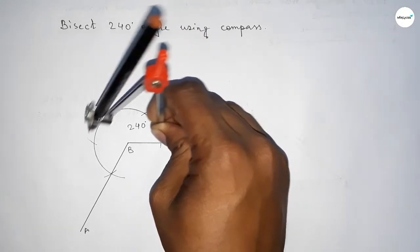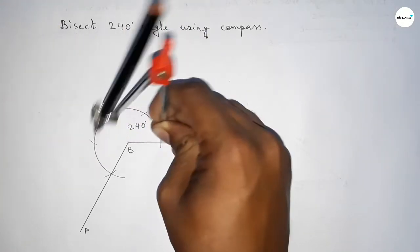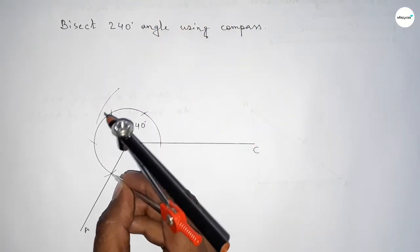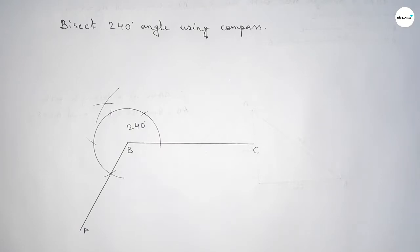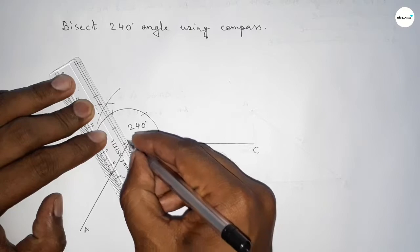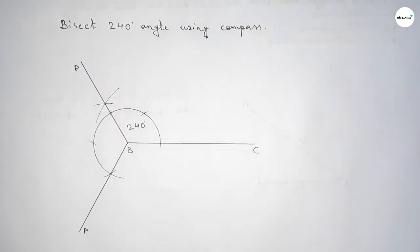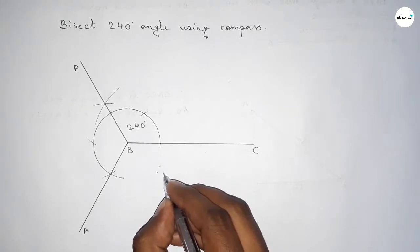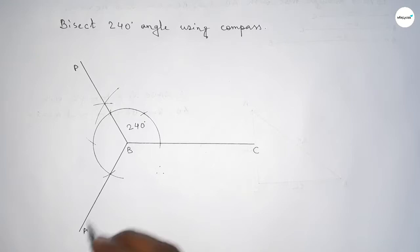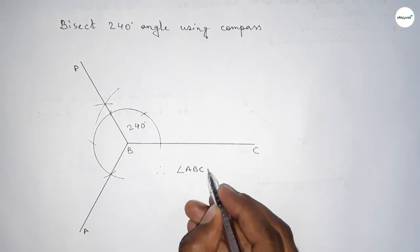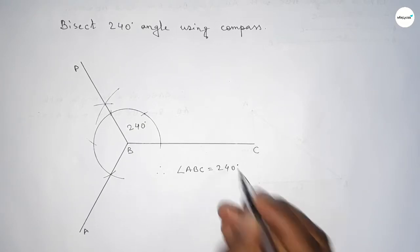Drawing an arc here, then again with the same length, putting the compass here and cutting here and here. Both curves intersect at a point. Joining this line gives us exactly 180 degrees. Taking point P here, so angle ABC equals 240 degrees.